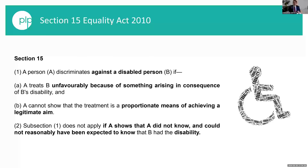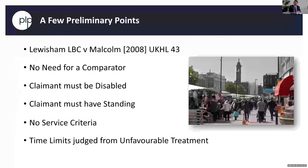There's Section 15 in its glory — words you'll be familiar with no doubt. Some of the key phrases we'll look at are that idea of unfavourable treatment, and that specific wording for causation — 'because of something arising in consequence' — and what that's likely to mean.